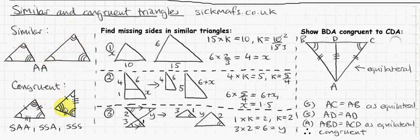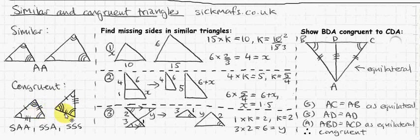Congruent triangles are exactly the same. Maybe one is just turned on its side — this one is turned on its side compared to that. This angle is equal to this angle. They have three sides that are the same: this side equals that side, that side equals that one, and this one equals that one. So they're congruent.